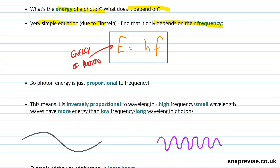H is Planck's constant, and that is 6.63 times 10 to the minus 34 joule seconds.